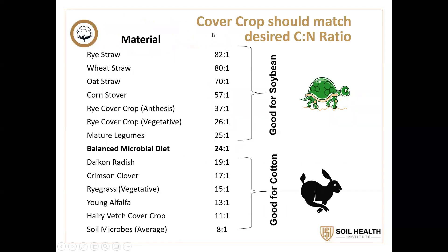Particularly important is the concept of carbon-to-nitrogen ratio. Plants with a high carbon-to-nitrogen ratio — such as cereal rye and wheat straw at about 82 to 1 — tend to tie up nitrogen. In order to break that down, microbes, which have a C:N ratio of about 8 to 1, need a lot of nitrogen, so it will take about 10 units of nitrogen to break down that rye or wheat straw. That takes a long time, so you need to consider whether a cereal rye cover crop is going to tie up nitrogen from the following crop.